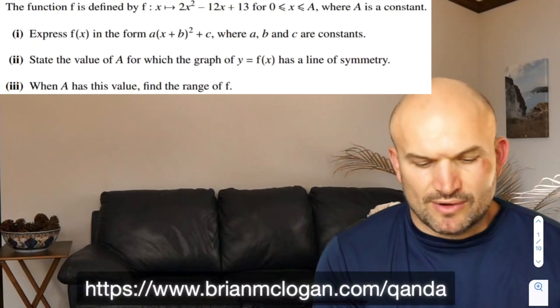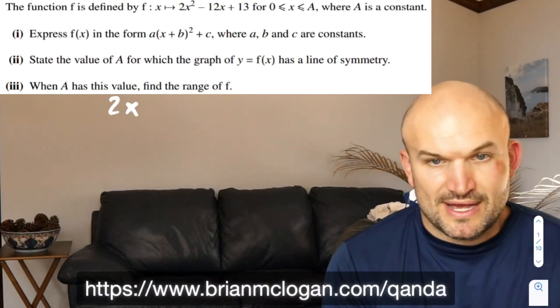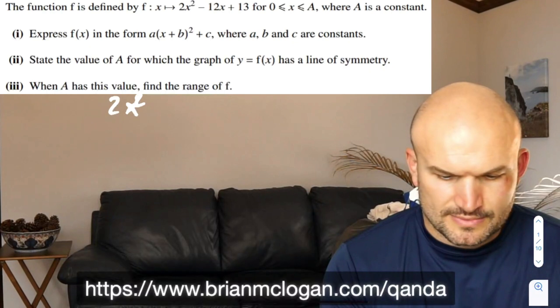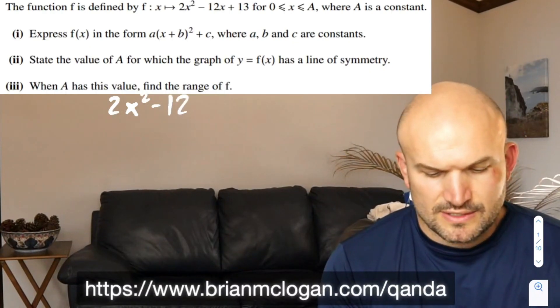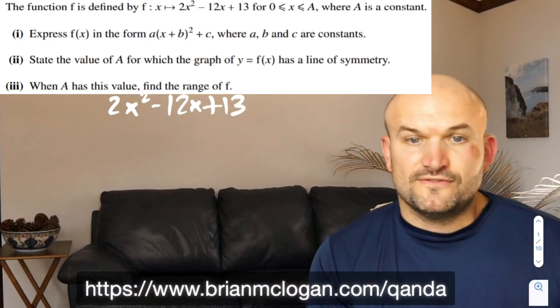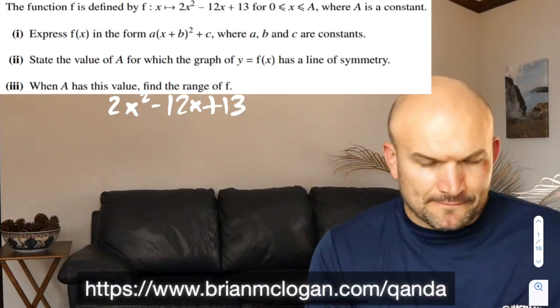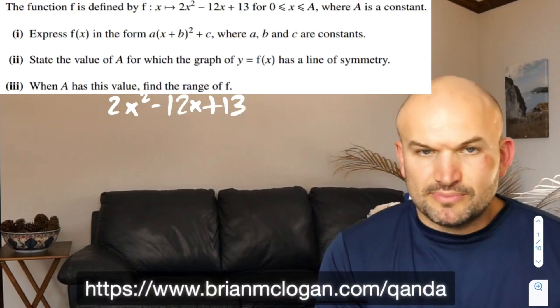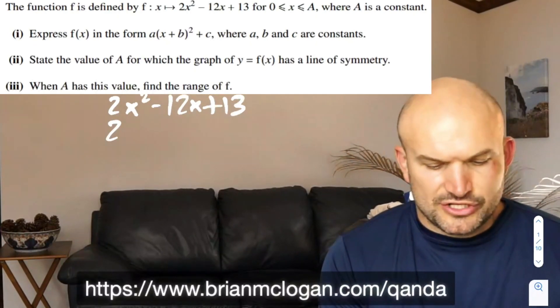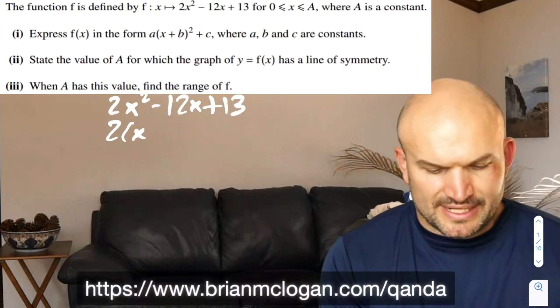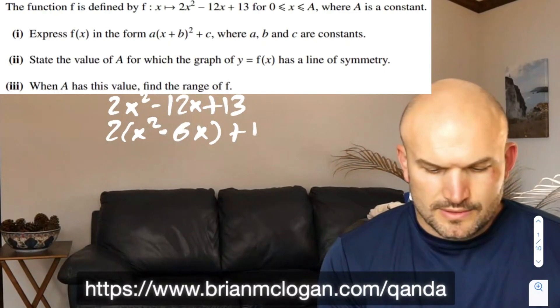If we want to rewrite this, if I have 2x squared minus 12x plus 13, the first thing we're going to want to do is complete the square. There's many ways we can look at completing the square. I'm going to go ahead and factor out a 2 from the first terms, and that's going to give me 2 times (x squared minus 6x) plus 13.